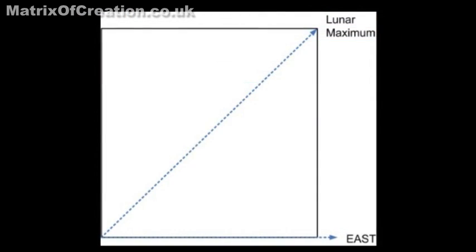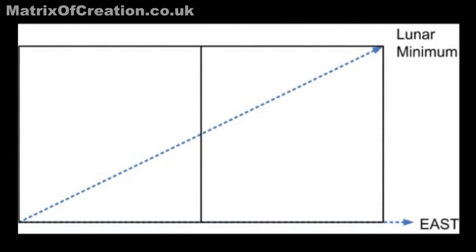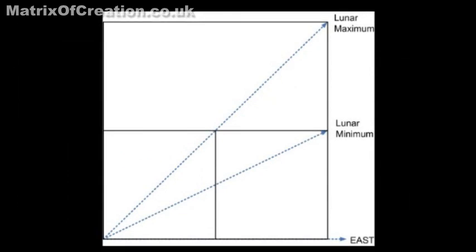It is also true at Karnak that every 6800 days the moon rises across the diagonal of a simple square, and half of that — 3400 days later — it can only rise across the diagonal of a double square. So the range during that period is between a single square diagonal and a double square diagonal.